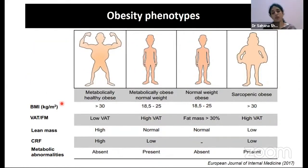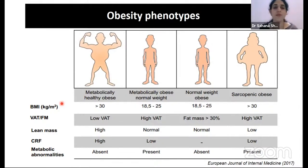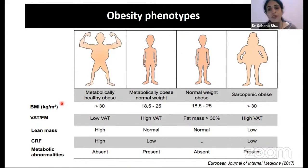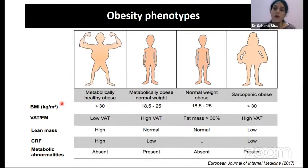Based on body composition distributions, four specific obesity phenotypes are described. First, metabolically healthy obese: obesity based on BMI but normal or lower visceral adipose tissue and no metabolic abnormalities. Second, metabolically obese normal weight: normal BMI but high visceral adipose tissue and high risk of metabolic abnormalities. Third, metabolically normal obese: normal BMI with higher fat mass, may not yet have metabolic abnormalities but at high risk. Fourth, and worst, sarcopenic obesity: high BMI, high visceral fat, low lean mass, low cardiorespiratory fitness, metabolic abnormalities, and high cardiovascular mortality.